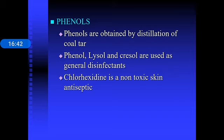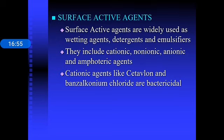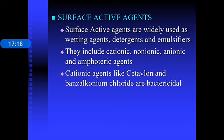Phenols are obtained by distillation of coal tar and include phenol, Lysol, and cresol; they are used as general disinfectants. Chlorhexidine is a non-toxic skin antiseptic. Surface active agents are widely used as wetting agents, detergents, or emulsifiers; there are four types — cationic, non-ionic, anionic, and amphoteric — of which the cationic agents are bactericidal, for example cetrimide and benzalkonium chloride. Metallic salts of silver, copper, and mercury are used as disinfectants, with copper salts also used as fungicides.